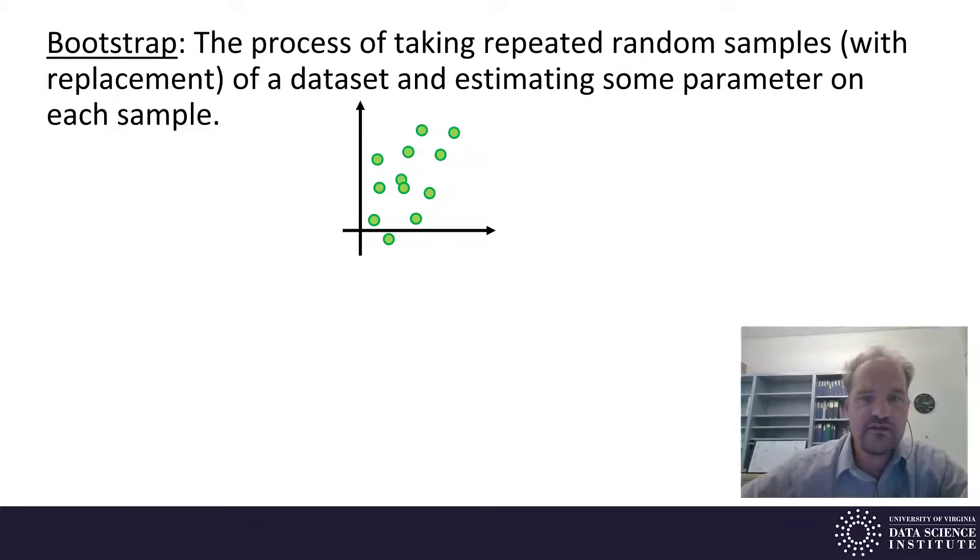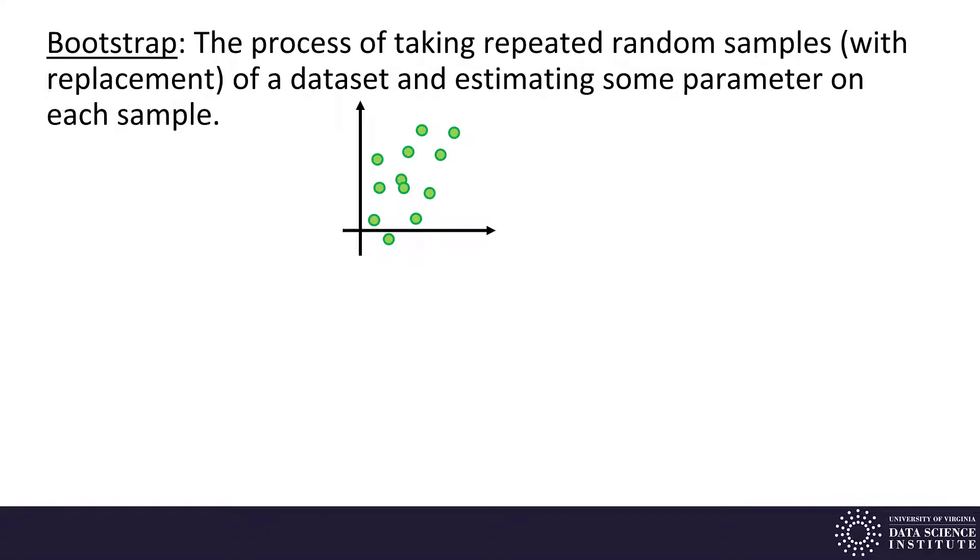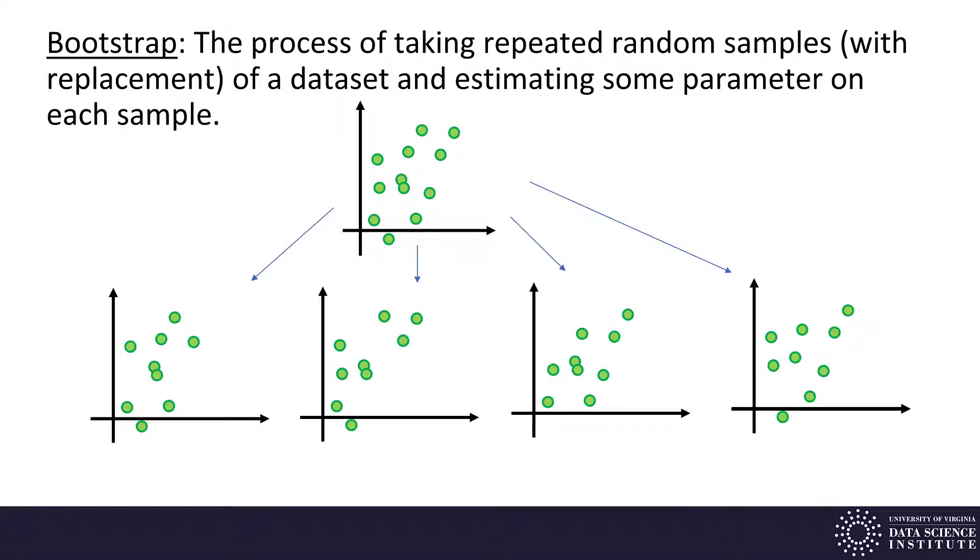For example, we have a scatterplot of data here and suppose we want to understand our estimation of the slope of a regression line for this data. So what we can do is take a random sample, take four different random samples with replacement of this data, and then on each of those we estimate a regression line and then we look at the estimated slope of that regression line,